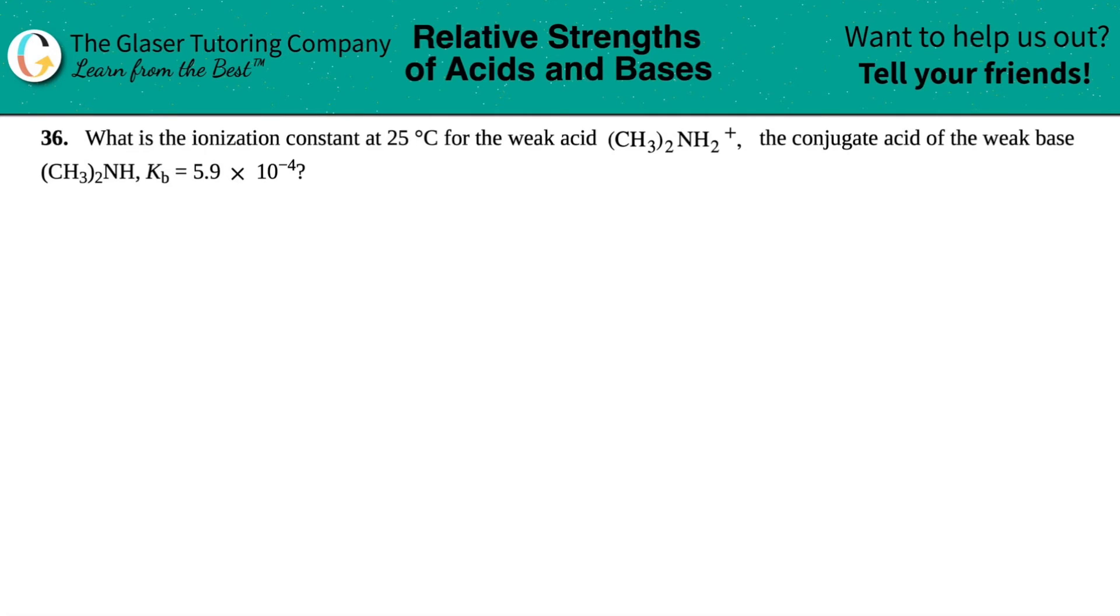Number 36, what is the ionization constant at 25 degrees Celsius for the weak acid CH₃₂NH₂⁺, the conjugate acid of the weak base CH₃₂NH? They give us a Kb for that which is 5.9 times 10 to the negative fourth.